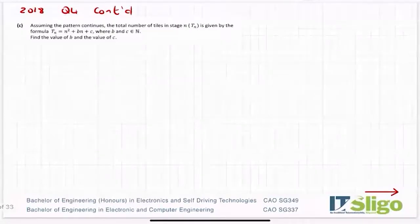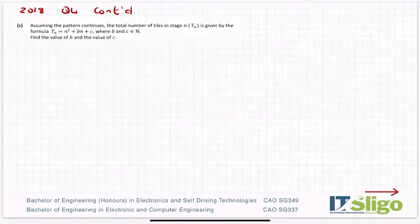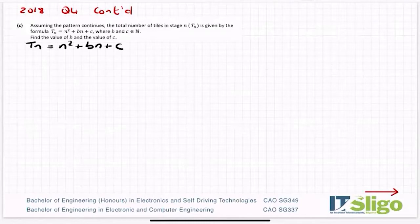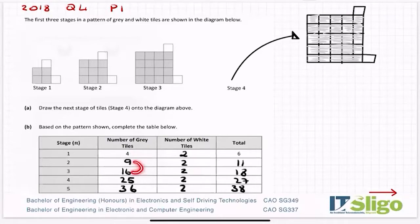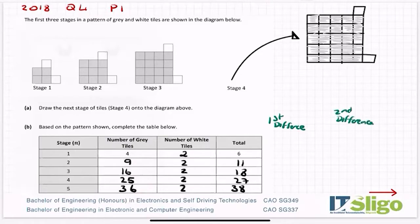Assuming the pattern continues, the total number of tiles in stage N is given by the formula TN is equal to N squared plus BN plus C — find the values of B and C. This is not an arithmetic sequence because I'm not adding on the same amount every time. Here I'm adding on five, here I'm adding on seven and so on. What is the easiest way of figuring out a particular sequence? Well, you have what's called the first difference and what's called the second difference. You also have third difference and so on, but we'll stop at first and second.